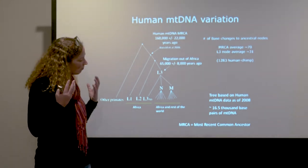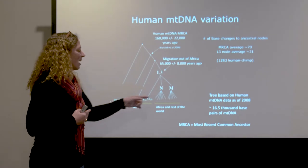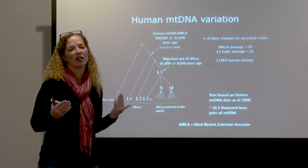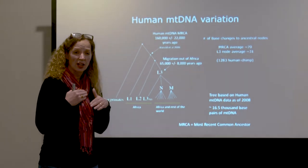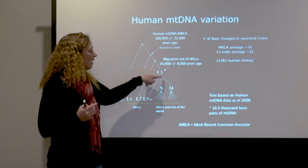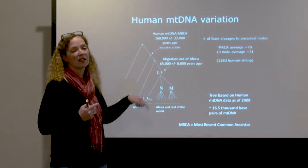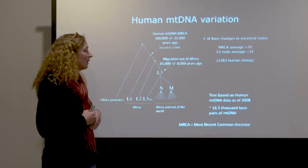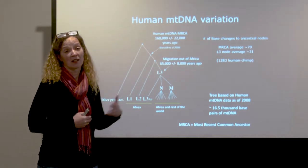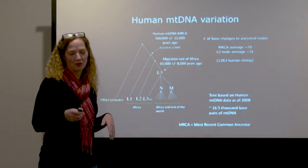We can reconstruct both the timing and the structure by looking at the number of differences in mitochondrial sequences. On average today there are about 70 base changes in the mitochondrial genome that take anybody back to the most recent common ancestor, and about 31 differences between non-African populations and the out-of-Africa lineage that left about 65,000 years ago. For comparison, there are about 1,283 differences between human and chimpanzee mitochondrial genomes.